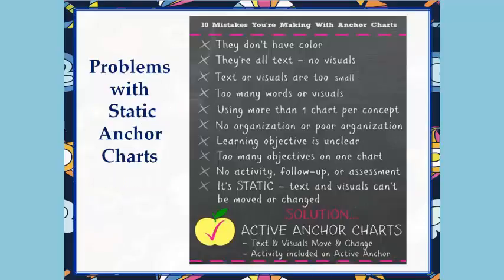Some of the problems I've seen with static anchor charts: they don't have color, they're all text with no visuals, the text or visuals are too small, there are too many words or visuals, and some teachers use more than one chart per concept — for example, three or four charts to go through the writing process, which becomes problematic for students to follow. Other problems include poor organization, an unclear learning objective or none listed at all, too many objectives on one chart, no activity, follow-up, or assessment, and the text and visuals simply can't be moved or changed.